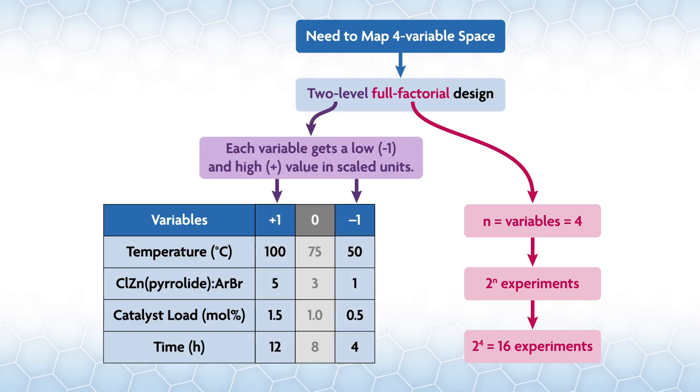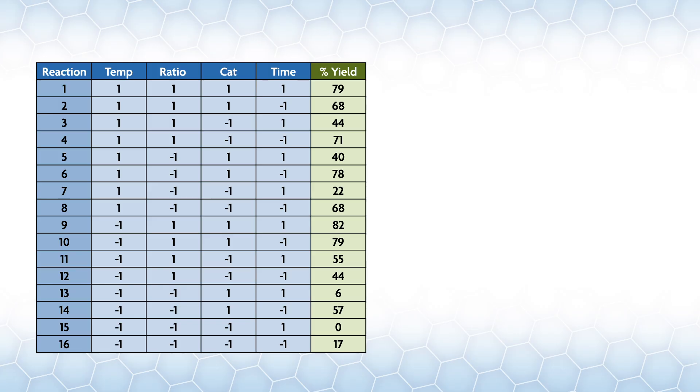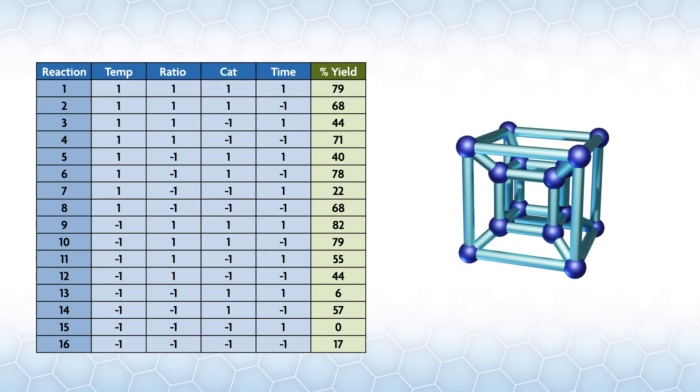Two-level means each variable gets a low, minus one, and high, plus one value in scaled units, like this, and I'll show the middle just because we're going to use that later. If you're certain your response surface is flat, you just need the plus one and minus one values, and you run these 16 experiments to get the yields. Here is a table with those experiments. Think of them as points on a 4D hypercube, and you're running all the corners. Okay, maybe that's not all that easy to visualize, but that's what's happening.